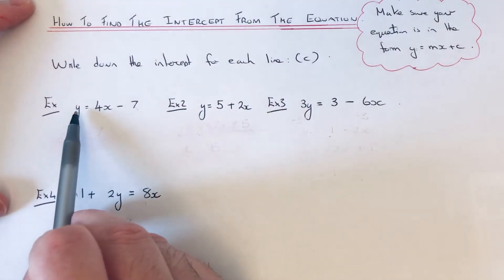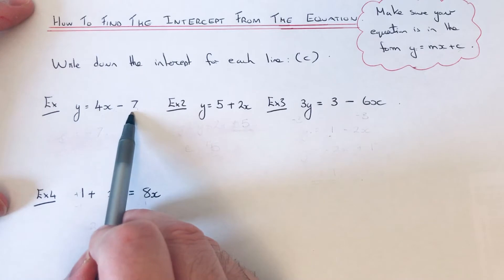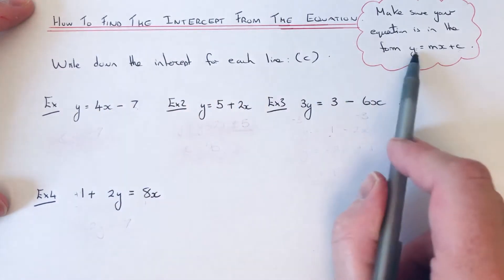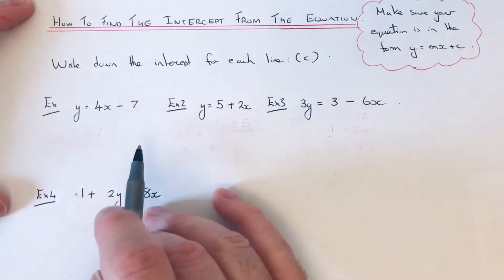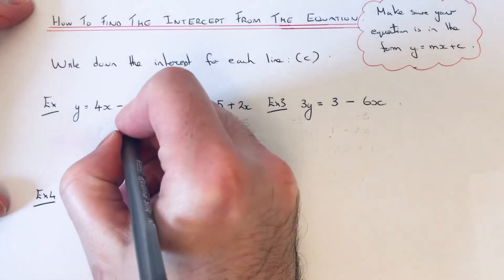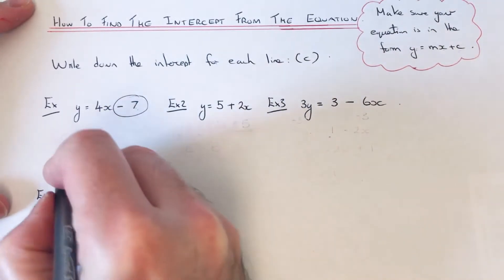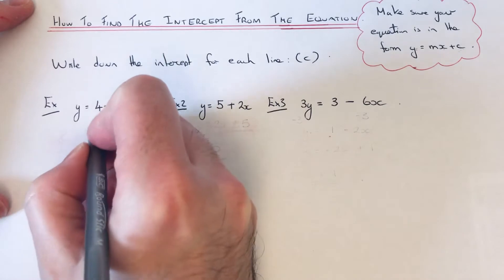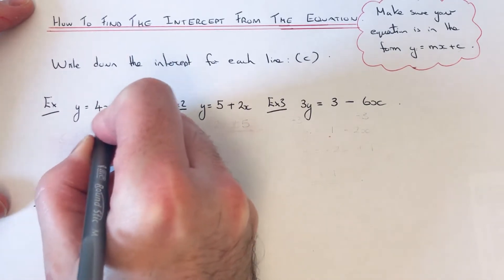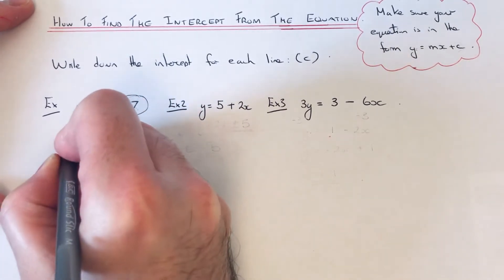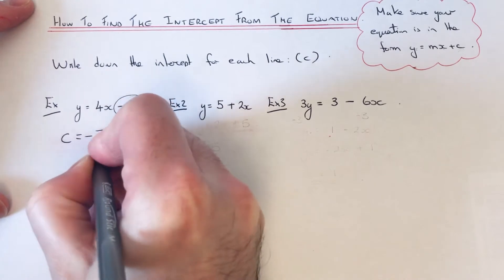The first one is y equals 4x minus 7. This is in the form y equals mx plus c, so we don't need to do anything. We just need to look at the number at the end, which is minus 7. Ignore the 4x term because 4 is the gradient. So c equals minus 7.